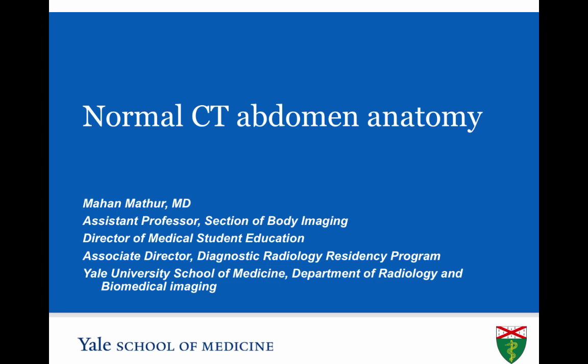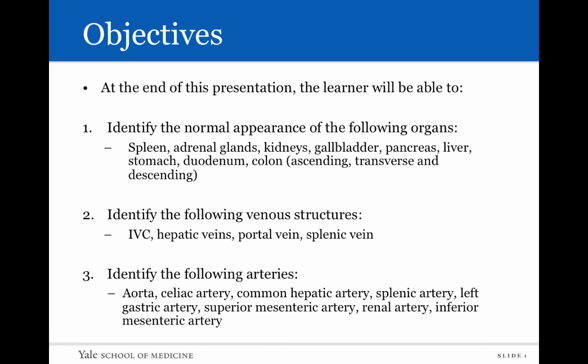The following video will cover normal CT abdominal anatomy. At the end of this presentation, the learner will be able to identify the normal appearance of a variety of organs within the abdominal cavity — specifically the spleen, adrenal glands, kidneys, gallbladder, pancreas, liver, stomach, duodenum, and portions of the colon.